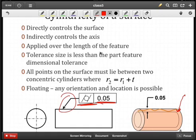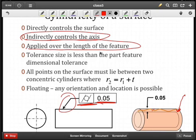Well, when I look at that, essentially what you're doing is indirectly controlling the axis, how straight that axis is, as you decrease the width of this tolerance zone. Because we're applying it over the length of the feature, whereas the circularity was just applied to individual cross-sections.